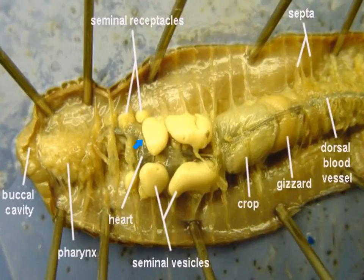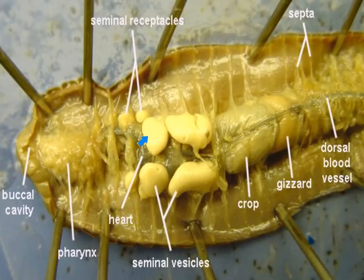Right here we have the hearts — the earthworm has five hearts that surround the esophagus. These hearts are anterior lateral vessels, or little loops, and they help force the blood from the dorsal to the ventral side. This is a very complex structure for an invertebrate to have.